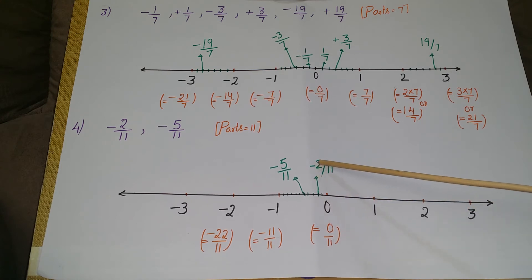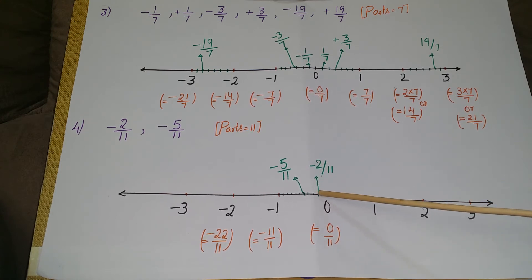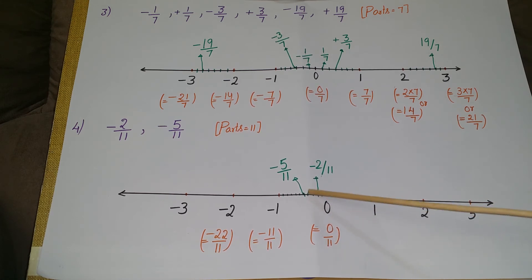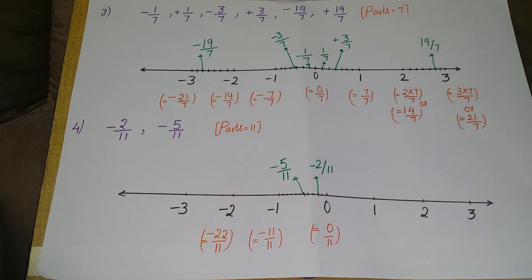For minus 2/11, from 0 count left: 1, 2 — so this is minus 2/11. For minus 5/11, count: 0, 1, 2, 3, 4, 5 — so this is minus 5/11. This is how we represent rational numbers on the number line.